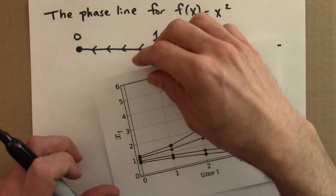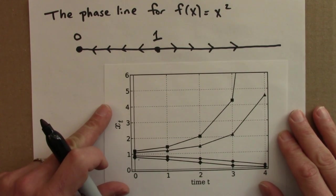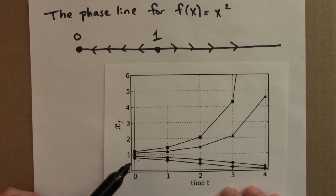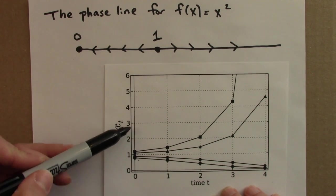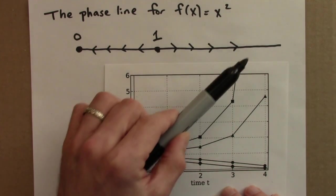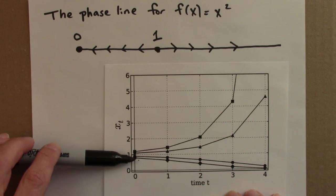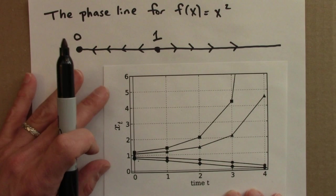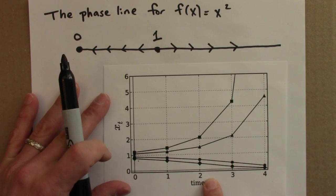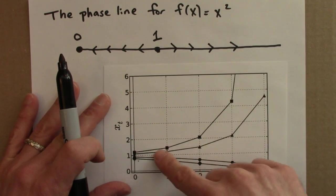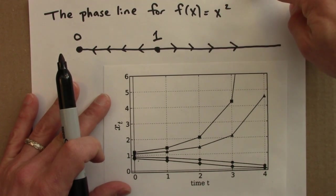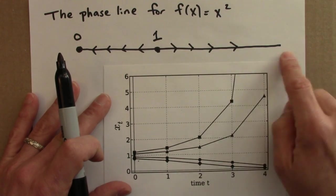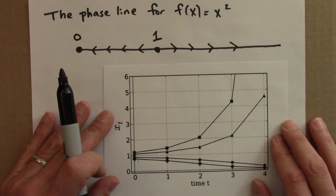Compare the phase line to the time series plots — they contain more or less the same information. On the time series plot, we saw that initial conditions above a threshold get larger, and any initial condition between 0 and 1 gets smaller and approaches 0. One thing to note is that on the time series plot, we can see how quickly this gets large — it's getting large pretty quickly. On the phase line, we just know the direction of motion, not the speed. The phase line tells us the direction of motion, but not the speed.